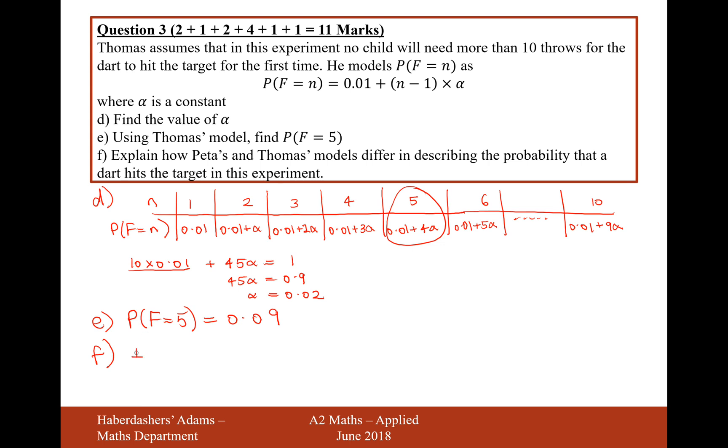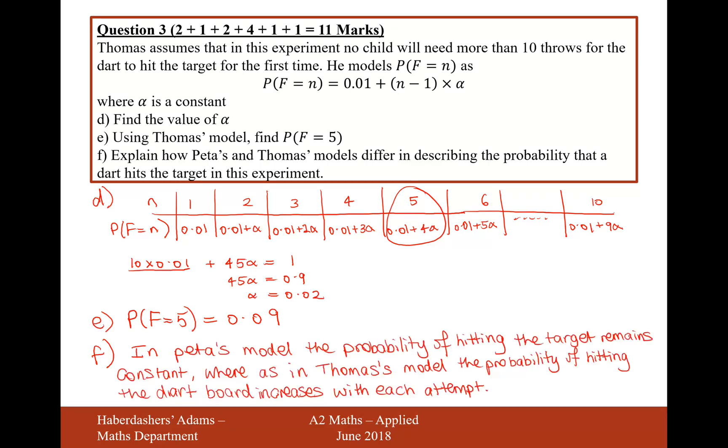So in Peter's model, the probability of hitting the target remains constant. Whereas in Thomas' model, the probability of hitting the dartboard increases with each attempt. So one model remains constant and one model has the probability of hitting the dartboard increasing. So that's the difference between the two models.